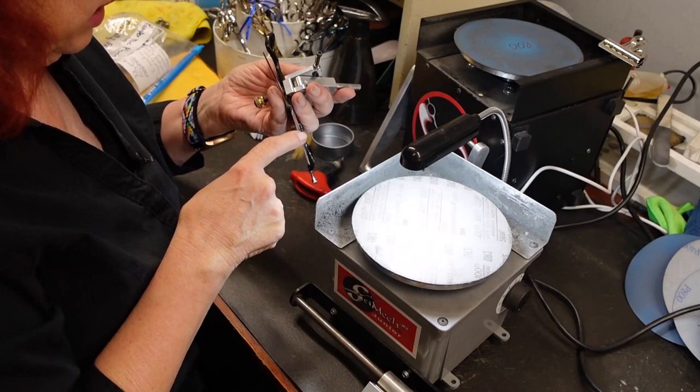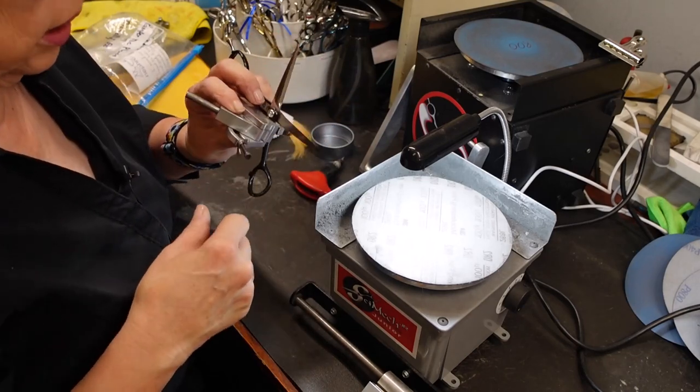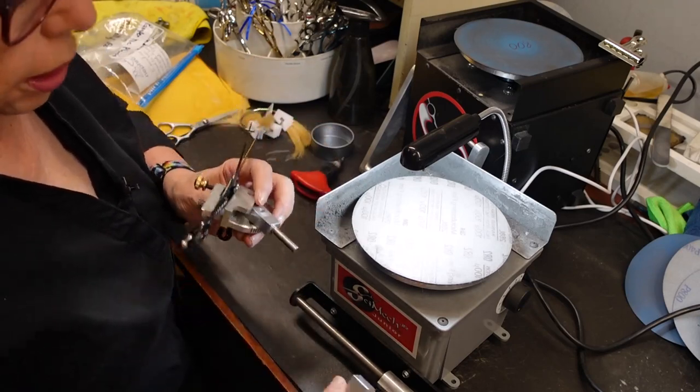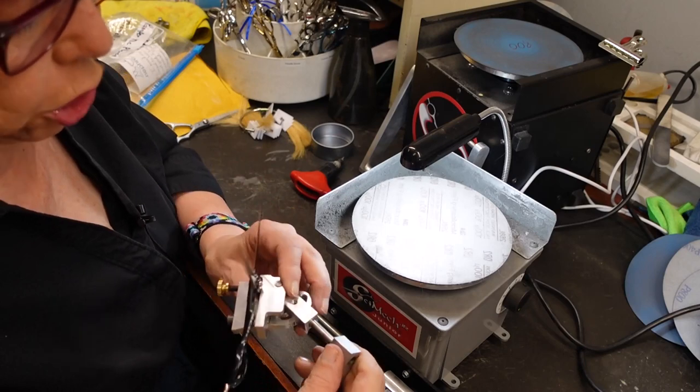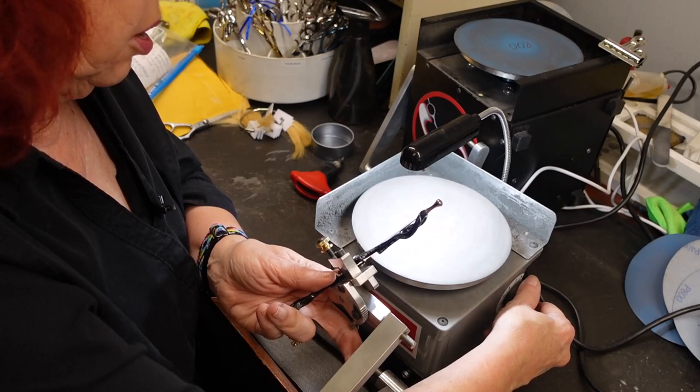35 is where it should be. Now do you notice what grit I'm using here? This is a worn 100 micron. You could use a fresh maybe 400 or 600. You want to use something pretty aggressive because you need to have a little bite in it. A lot of times these shears one blade will be serrated. I don't remember whether this one was or not originally.